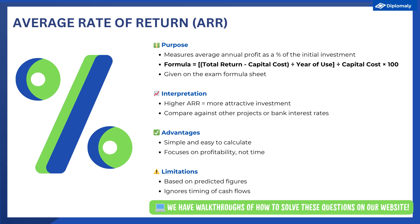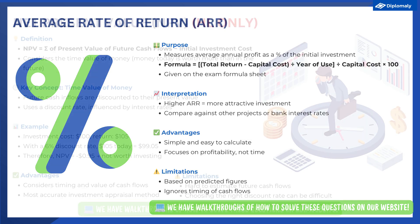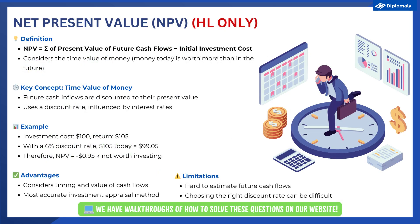That concludes the key concepts for SL students — you can skip straight to the end. HL students, we have one more technique called the net present value, or NPV. The NPV is the difference between the present value of future net cash flows and the initial cost of investment. It is the most complicated technique for most students, so let's break this concept down.